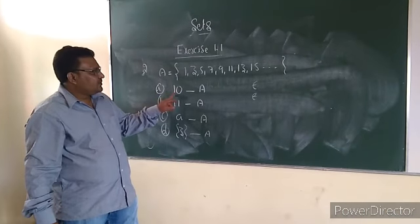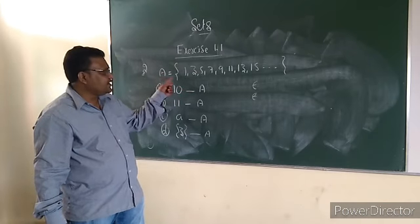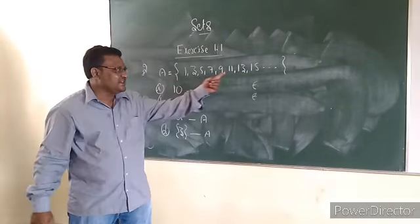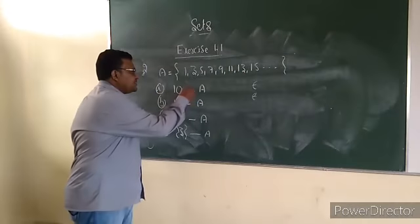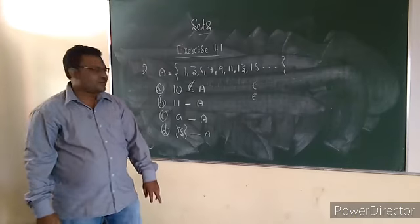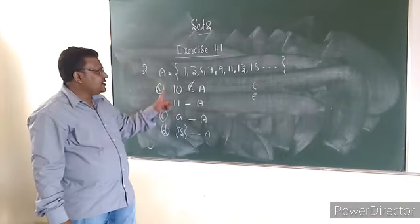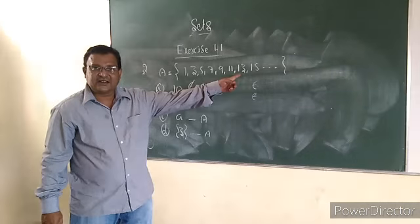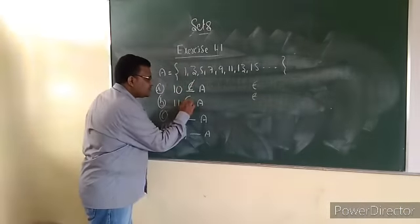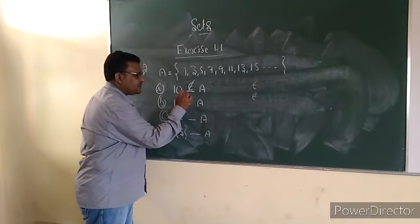Ten: is ten an element of set A, which is all odd numbers? Ten is not listed there. That's why the appropriate symbol is 'does not belong.' Next, eleven: eleven is an odd number, so eleven belongs to A. The appropriate symbol is 'belongs.'